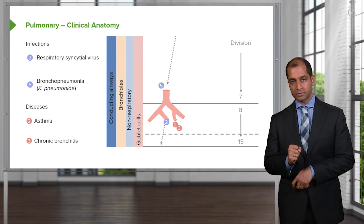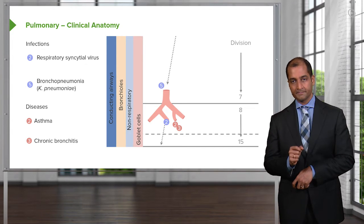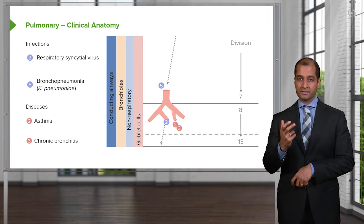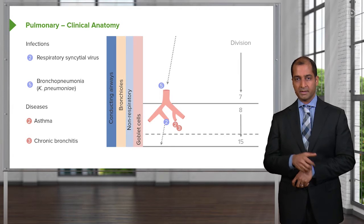This is still non-respiratory. What does that mean? This is the conducting zone. Its responsibility is to do what? To conduct air from the ambiance into the alveoli. It is its strict, strict responsibility.